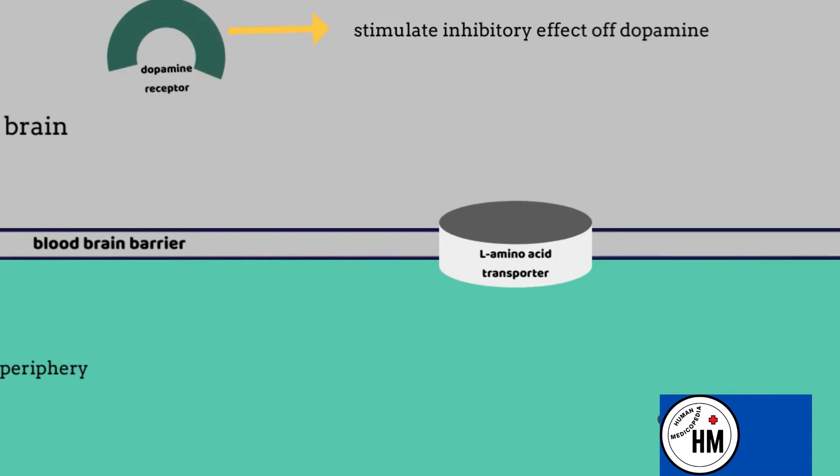On the other hand, dopamine agonist, like bromocriptine, can be used as an individual drug in patients who cannot tolerate levodopa. The mechanism of action of dopamine agonist is quite simple. It simply binds to the dopamine receptor and stimulates its inhibitory effect.